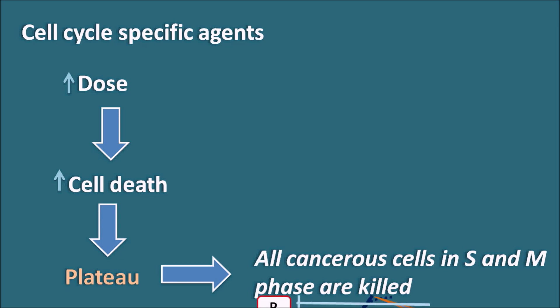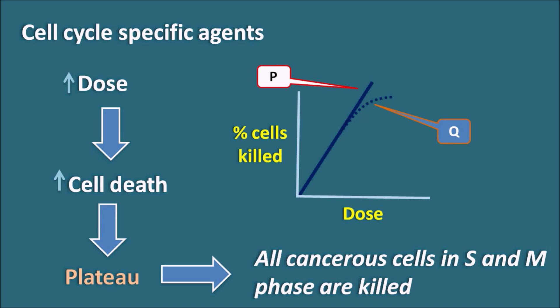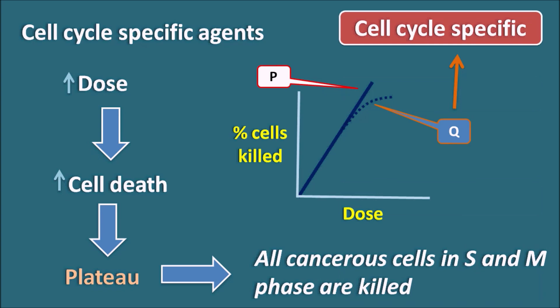In the given diagram, Q shows linearity up to a certain dose and after a high dose it shows a plateau. So Q is the cell cycle specific agent and P is the plot given by cell cycle non-specific agents.